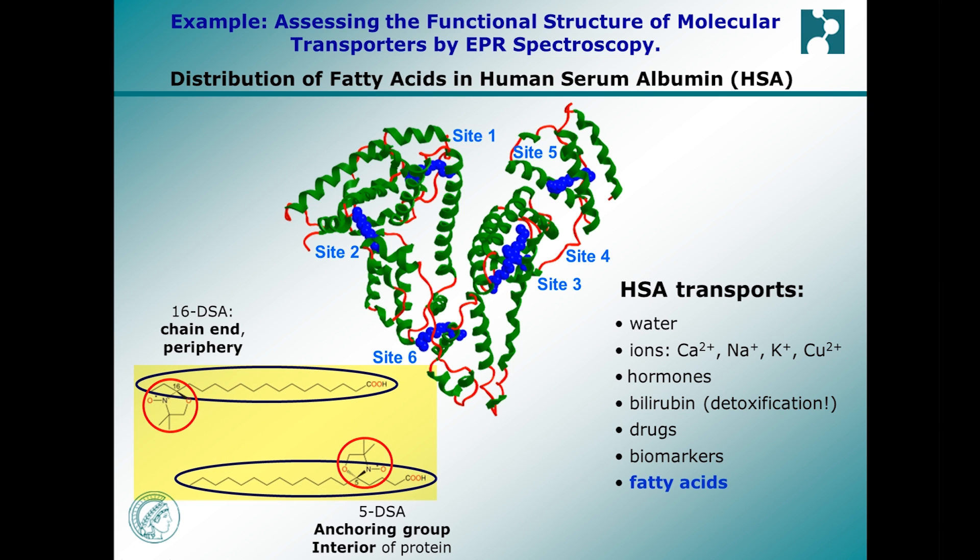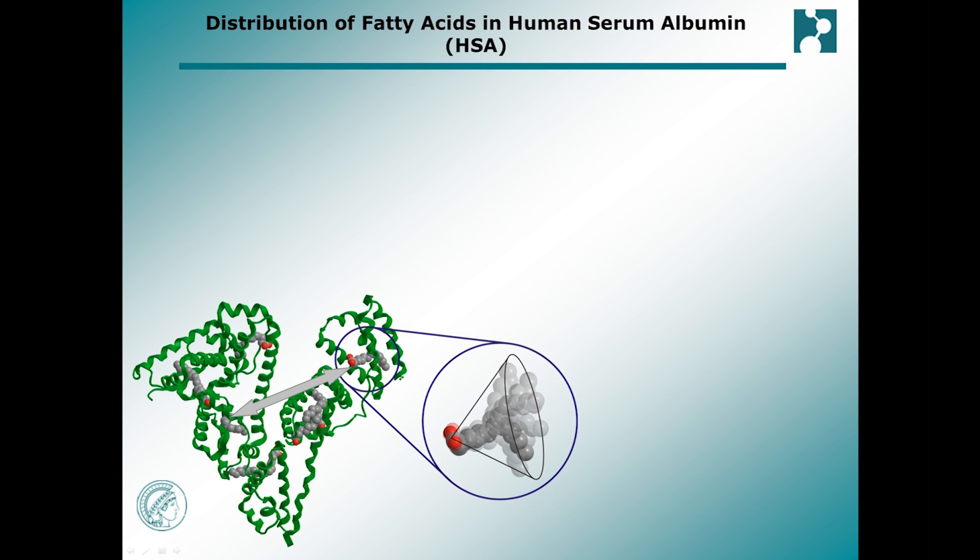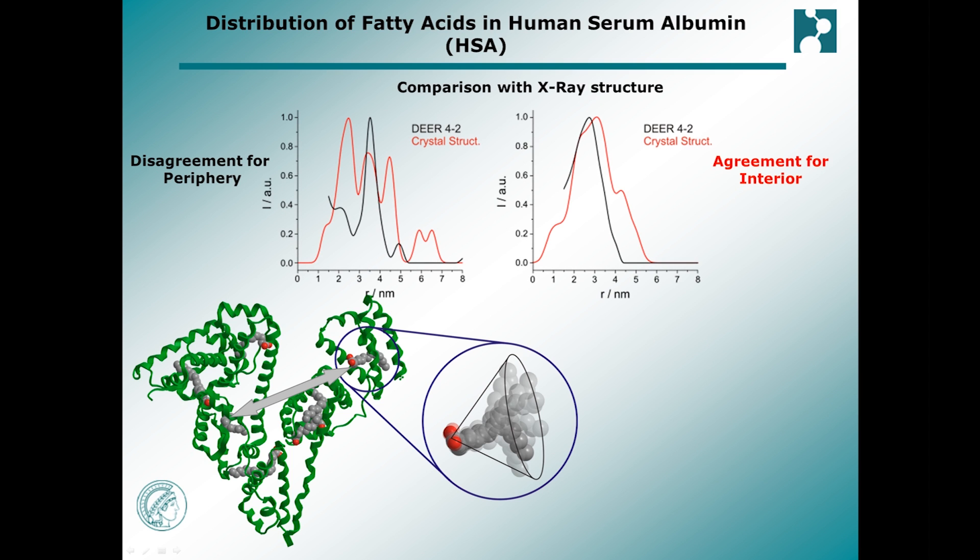Using spin-labeled stearic acids, the protein structure can be accessed from the ligand's point of view. The EPR distance measurements between the spin-labeled fatty acids reveal that the protein's functional solution structure exhibits a much more symmetric distribution of entry points to the transport sites than expected from its crystal structure.